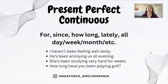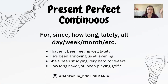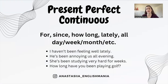We use present perfect continuous with time markers like: for, since, how long, lately, all day, all week, all month, etc. For example: 'I haven't been feeling well lately.' 'He's been annoying us all evening.' 'She's been studying very hard for weeks.' 'How long have you been playing golf?'